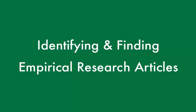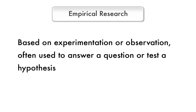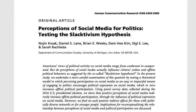Empirical research requires you to look for several elements in an article. Empirical research is research based on experimentation or observation. This kind of research is often conducted to answer a question or test a hypothesis. The results of empirical research are distributed through academic journal articles.